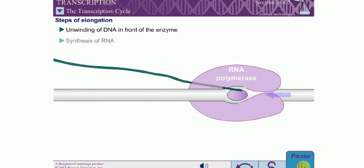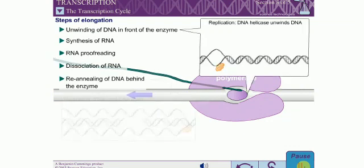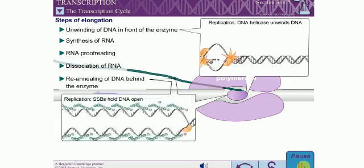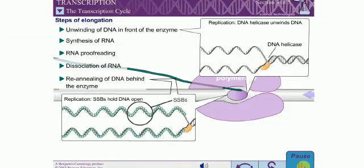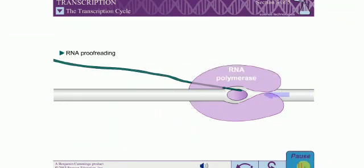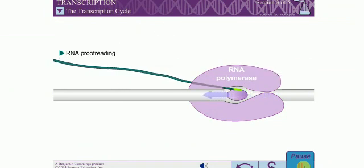During elongation, RNA polymerase unwinds the DNA in front of the enzyme, synthesizes RNA, proofreads RNA, dissociates RNA from the DNA, and re-anneals the DNA behind the enzyme. In contrast with DNA polymerase, RNA polymerase is able to perform these functions without the assistance of other proteins.